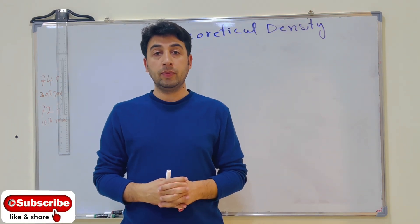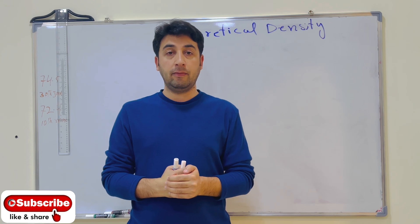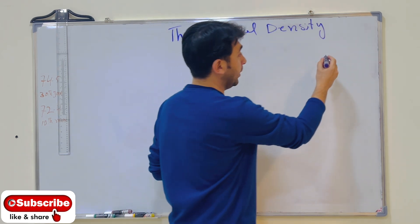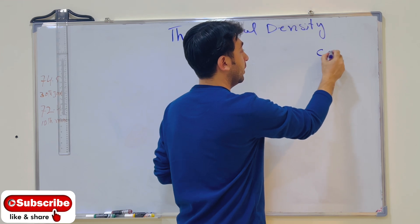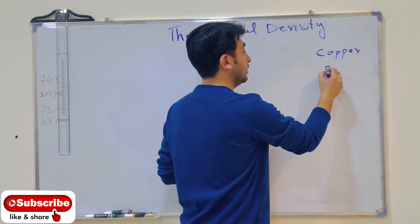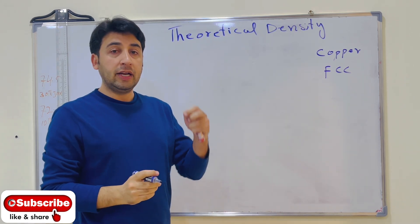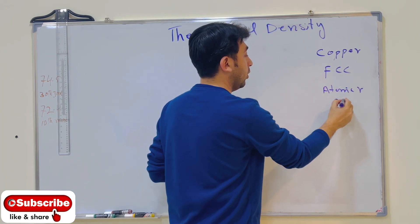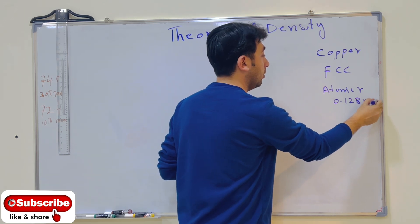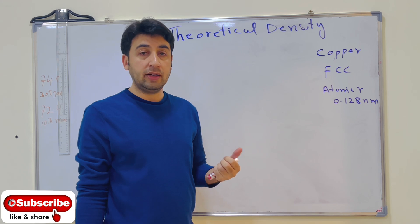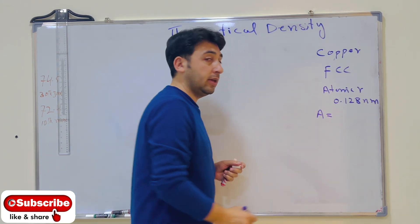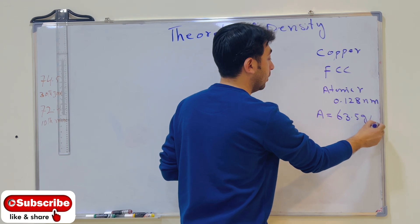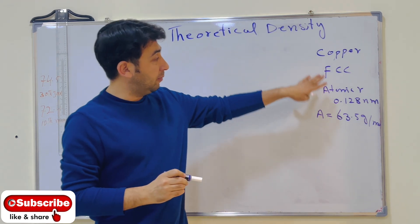Hello everyone, I hope everyone is doing well. Today we will calculate the theoretical density of a metal — specifically, copper. Copper has an FCC crystal structure. The atomic radius for copper is 0.128 nanometers, and the atomic weight is 63.5 grams per mole. We have this information and we need to calculate the theoretical density of copper.